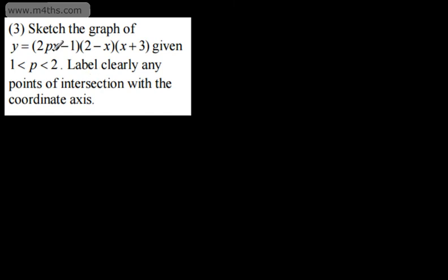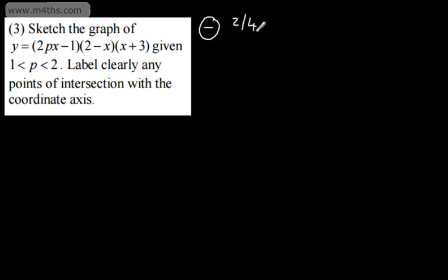If we look at this, this is a cubic equation — we've got x, x, and x. Multiplying this out, we will get a term in x cubed. If we consider now, this is a positive quantity, so what we're going to have is a positive x multiplied by a negative x multiplied by a positive x. Therefore, this is going to be a negative cubic. When we're drawing this, it will start in the second quadrant and come out the fourth.